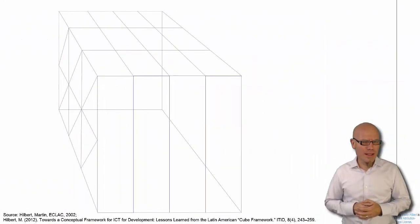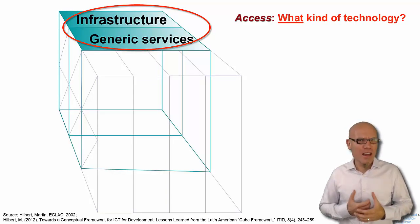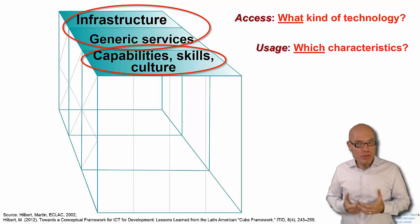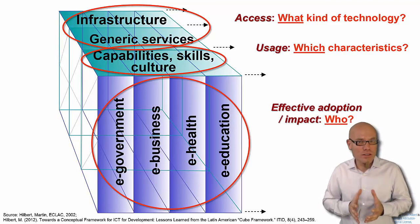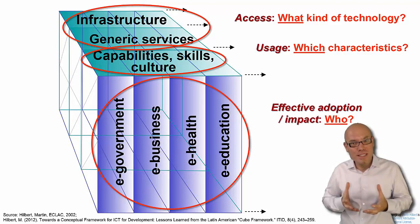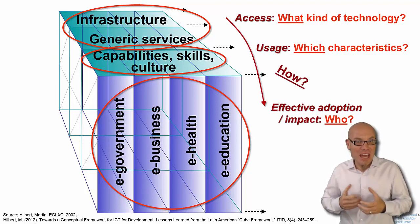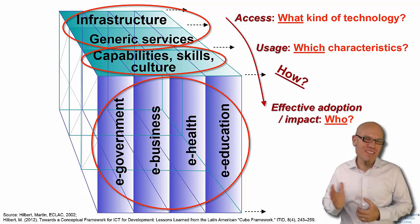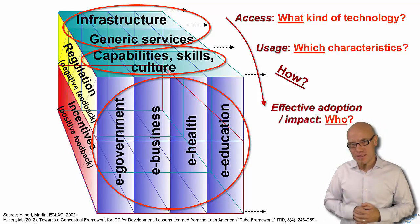You can also look at these four perspectives through our cube framework. First, you have access to the technology — so you ask what kind of technology are we talking about in our specific study. Then you ask about the usage characteristics, which kind of characteristics do these users have — the human component of usage. Then you ask who we are actually talking about: individuals, hospitals, or businesses. Then you ask how — what is the intensity of connectivity, are we talking about simply having access, usage, or real impact? And then of course you design different policies, the third dimension, to foster the adoption of digital technologies and to narrow the digital divide.